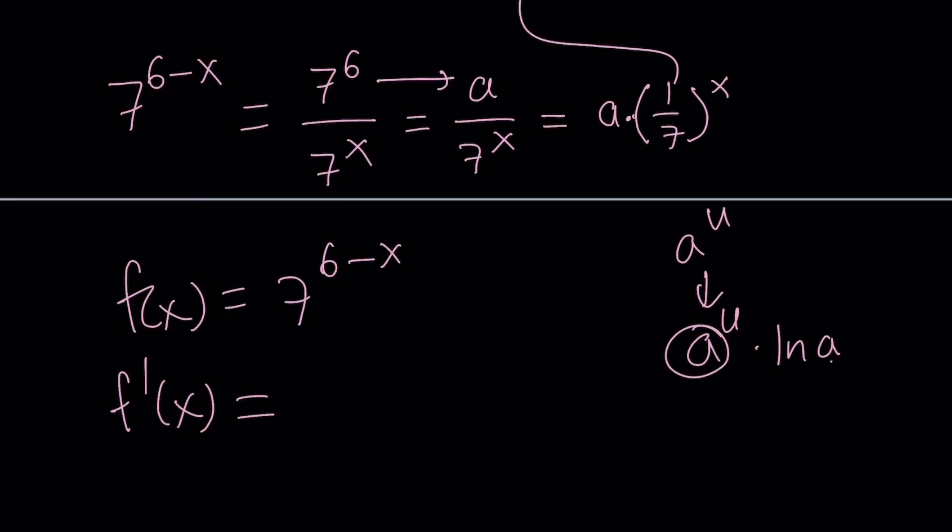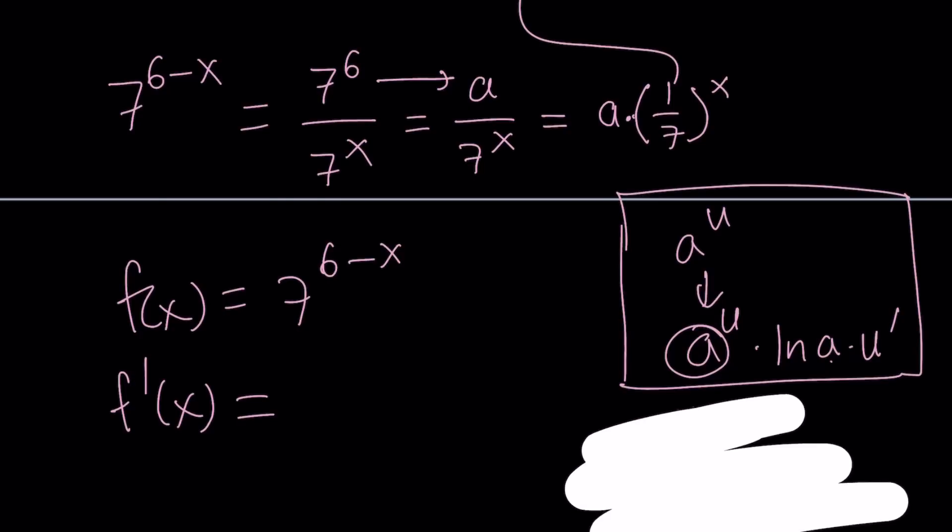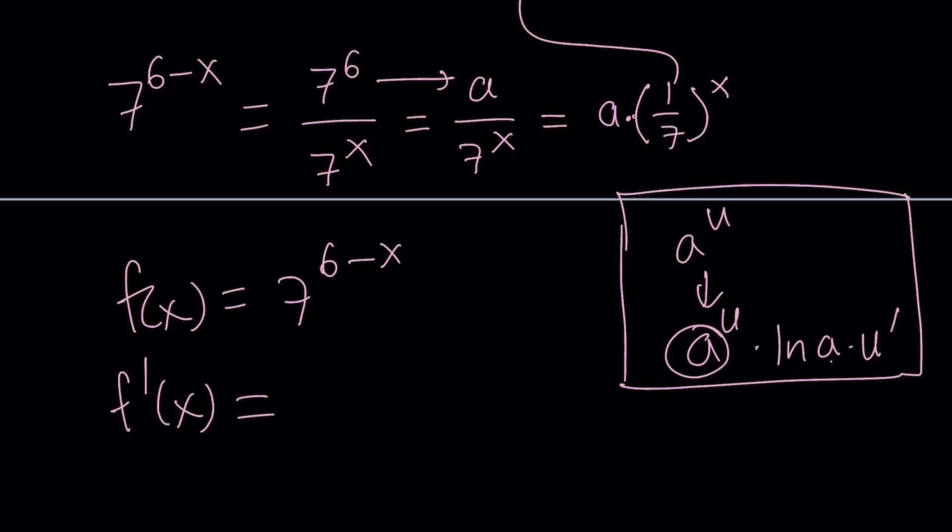Then you kind of like differentiate it like e to the power u, like same thing, but you also have to multiply by ln a to adjust the base. If you have e at the base, Euler's number, then ln is going to be 1. So, that's why the derivative of e to the u is e to the u. No ln is needed, but you also have to multiply by u prime, which is from chain rule. Anyways, that's the rule for the differentiating this type of function.